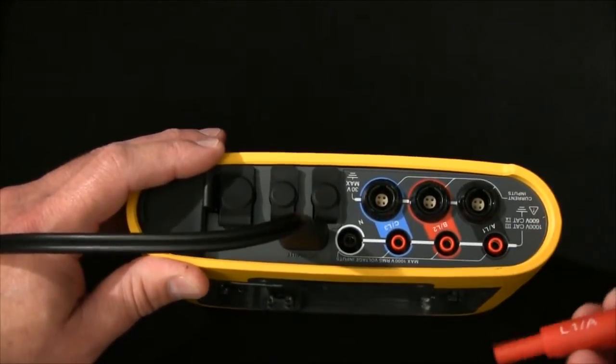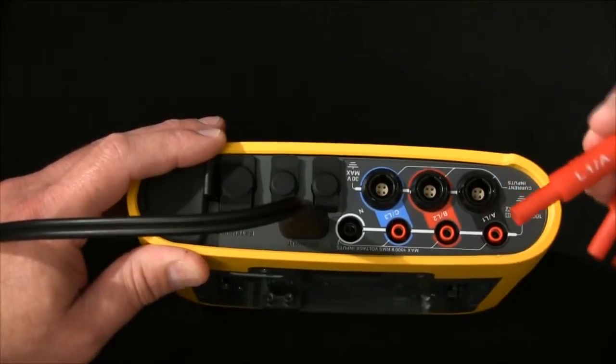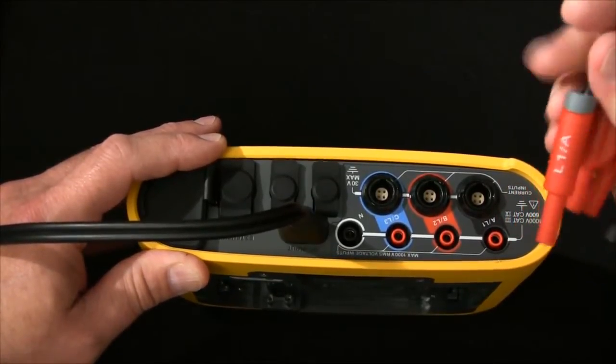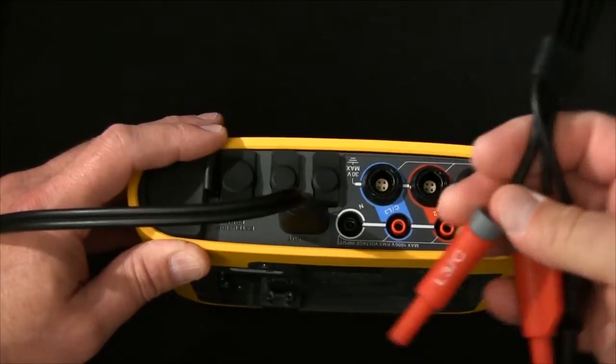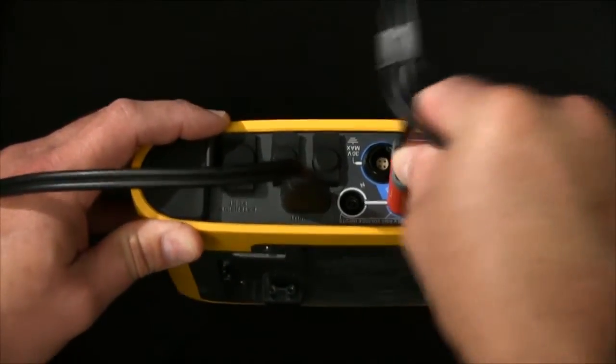we connect up the voltage leads as normal. So looking at the connections that are labeled A, B, and C, we make the voltage lead connections to the instrument.